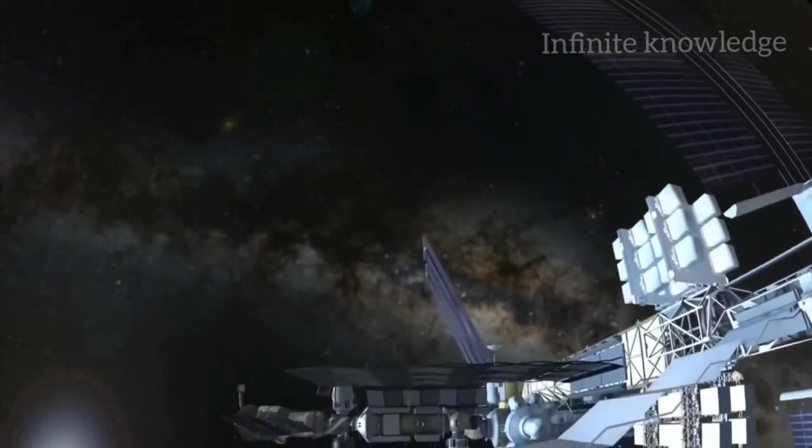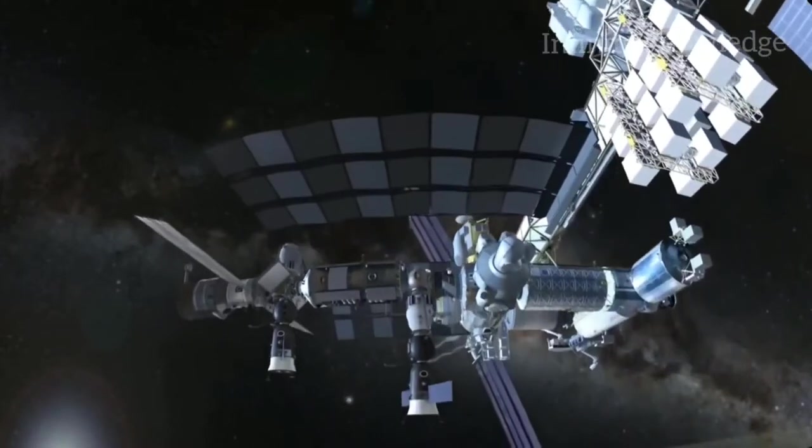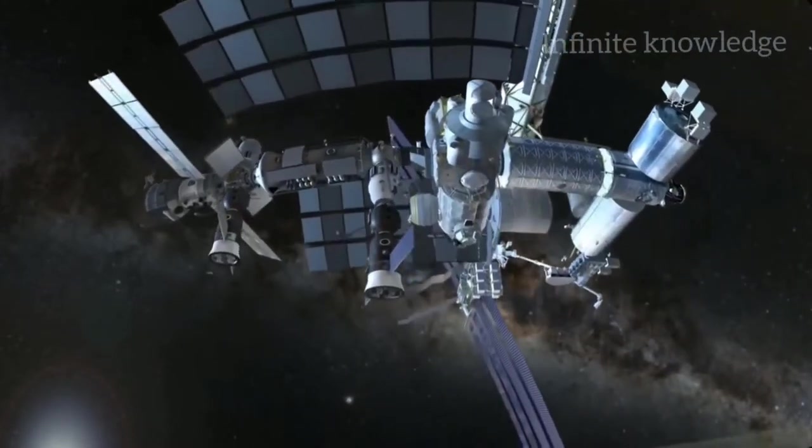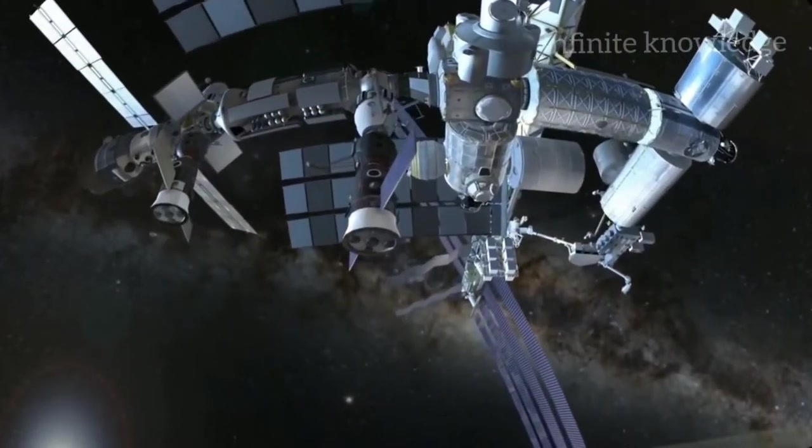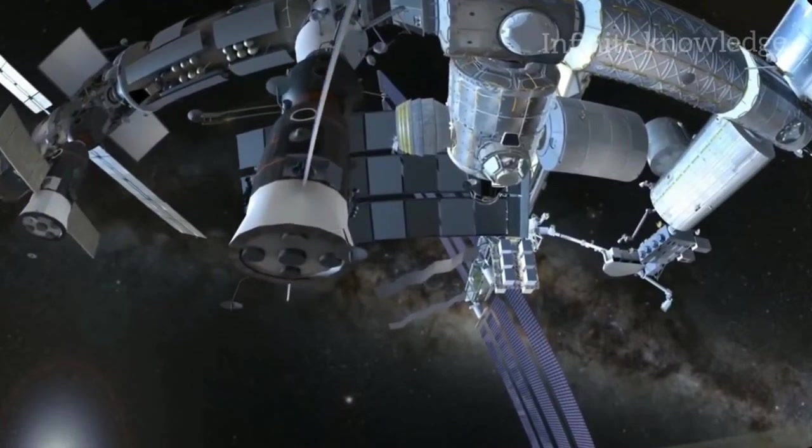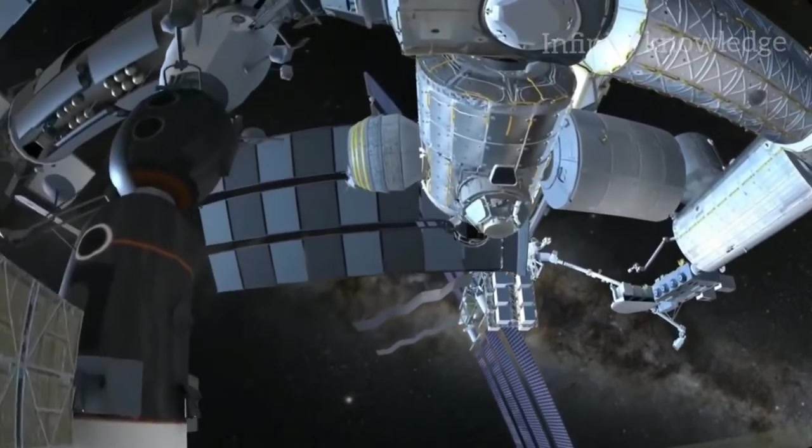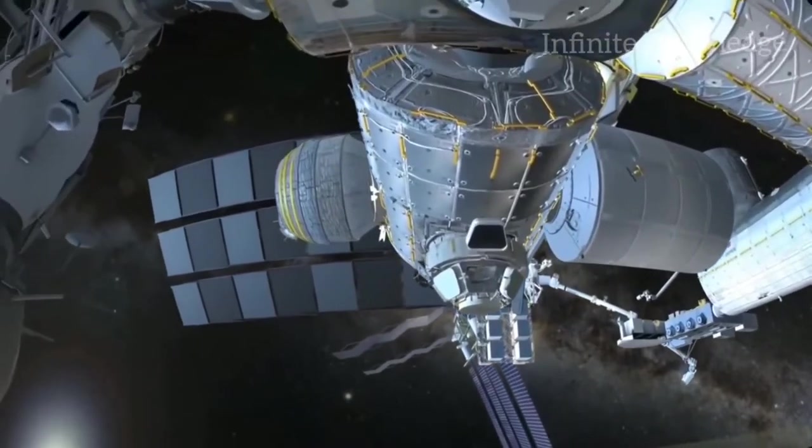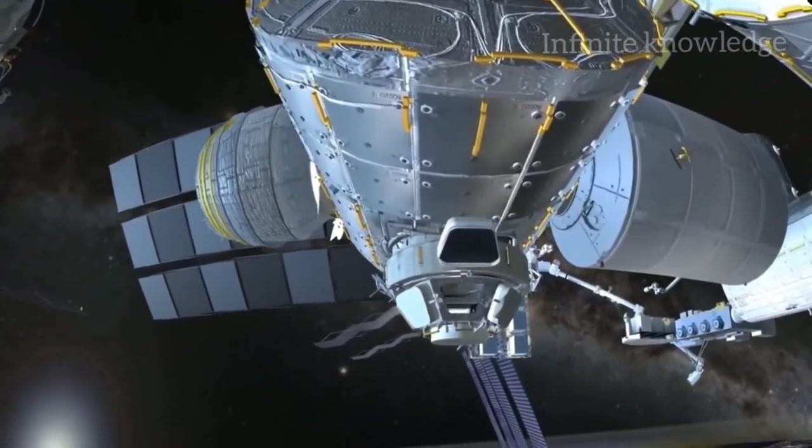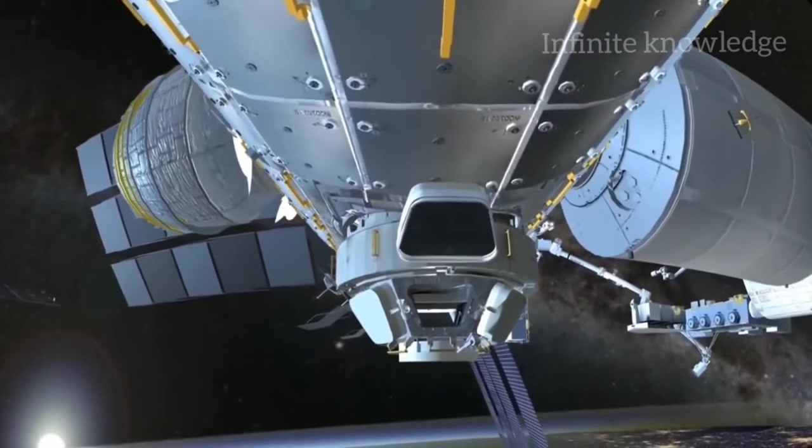The low orbit of the International Space Station keeps it within Earth's protective magnetic field. In early 2016, astronauts gathered in the cupola, their favorite place to watch the Earth below.